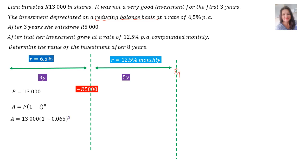P is 13,000 bracket 1 minus. The rate was 6.5%, therefore i is 0.065, raised to the power of 3. Therefore, A's value is 10,626 Rand and 20 cents.